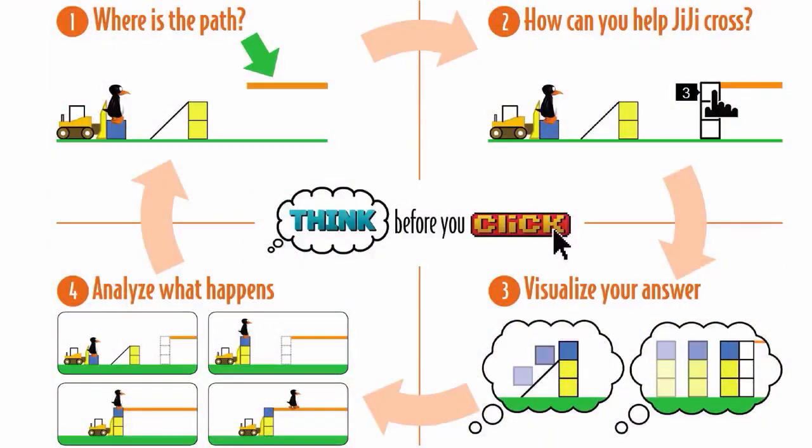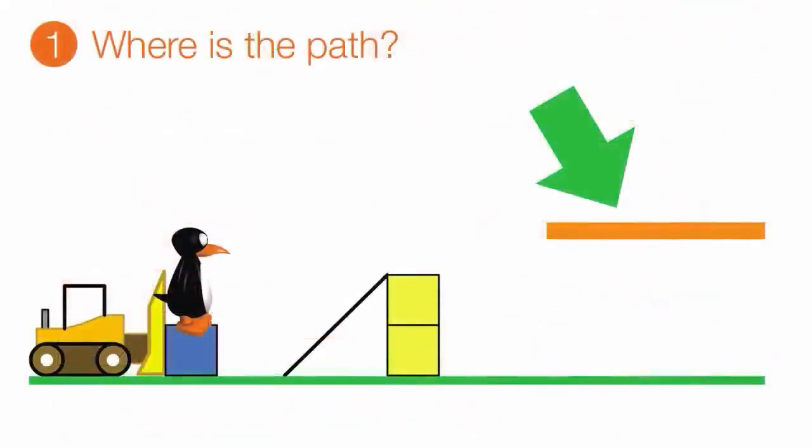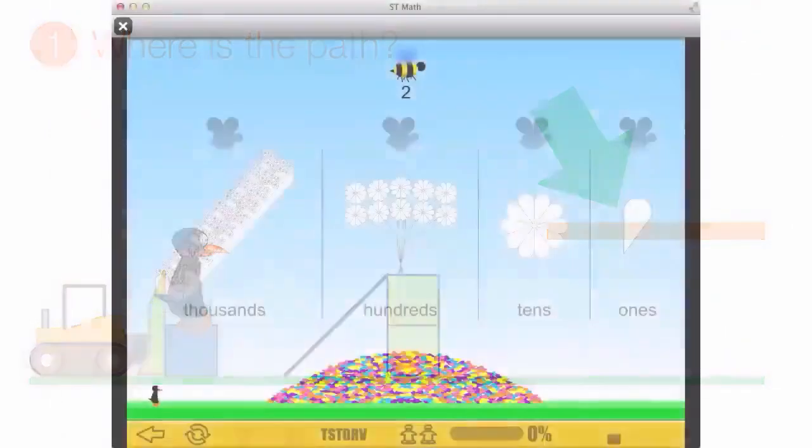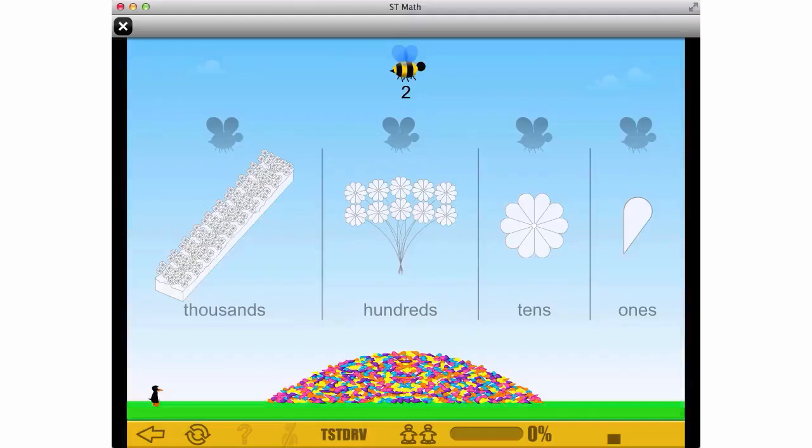We call this Think Before You Click. When you first see a game, you'll want to ask, where is the path? So, what's the path in this game? Gigi wants to cross the screen but has to get by a bunch of flower petals.